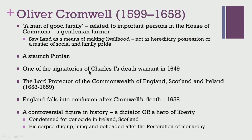Oliver Cromwell was born in 1599 and lived till 1658. 1599 was an important year in terms of English literary history — it was the year when the Globe Theatre was erected and also the year when Edmund Spenser died. Oliver Cromwell was from a good family; many historians talk about him as a man of good family. He was fairly wealthy, related to important persons in the House of Commons, and also a gentleman farmer with very idealistic views about life. He owned a little land which he cultivated but never saw land as a means of making a livelihood — it was not a hereditary possession or a matter of social and family pride.